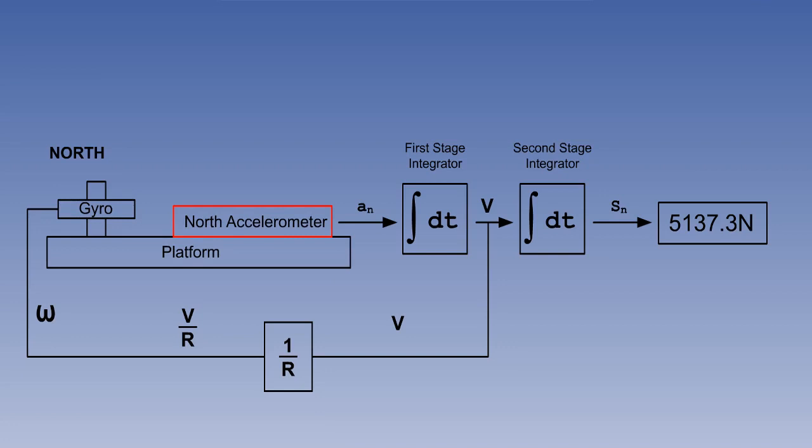Accelerometer bias is next. The accelerometers are designed to give zero output for zero input, if properly leveled. However, due to manufacturing imperfections, there may be some slight output when the accelerometer is perfectly stationary and level. This is called accelerometer bias.